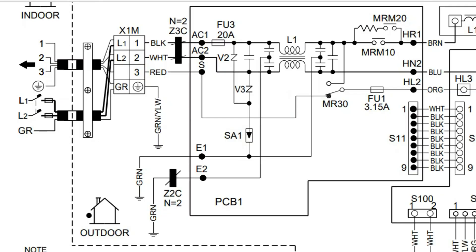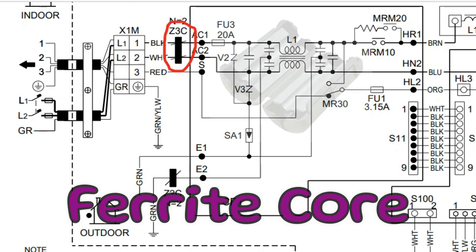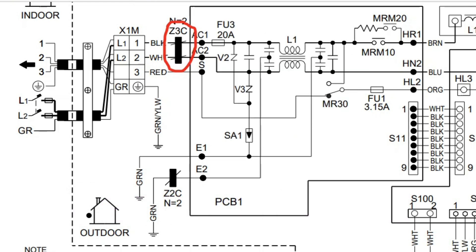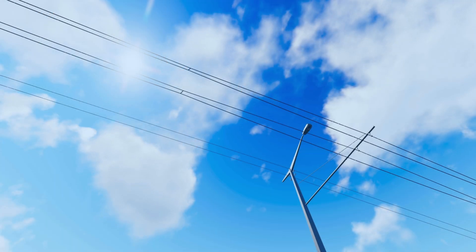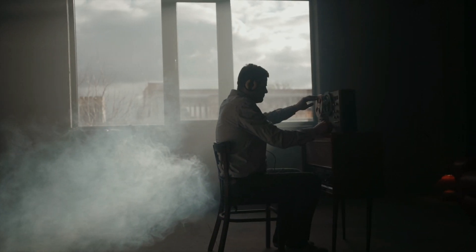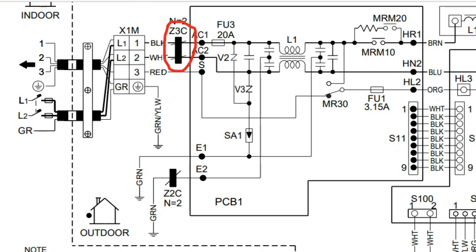Bringing power in past the terminals and into the unit, we come to this black rectangle here — that's called a ferrite core. A ferrite core wraps around the wire and protects the circuit from electromagnetic interference, or EMI. We're talking about noise and interruptions to the frequency that might come from nearby power lines, cell phones, or other sources. So right out of the gates, we're already trying to control and stabilize the electrical signal coming into this unit.